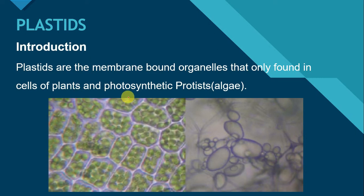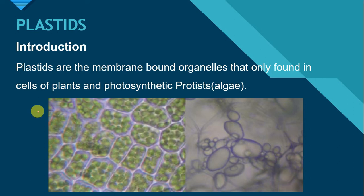Plants use the photosynthesis process to prepare food. That's why plastids are present only in plant cells, while in animal cells these plastids are absent, because the process of photosynthesis does not occur in animals.